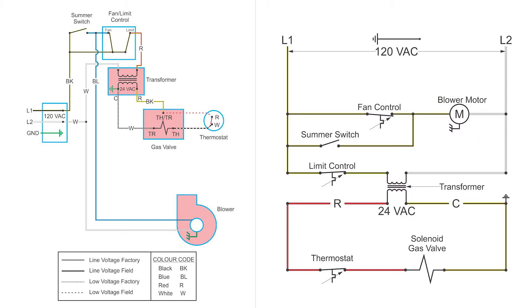So that blower will blow through the heat exchanger of the furnace, which is now hot, and blow that warm air throughout the house through the ductwork. Now you may have noticed a little green pitchfork on the side of that blower motor. That is a chassis ground. It's just another grounding wire.